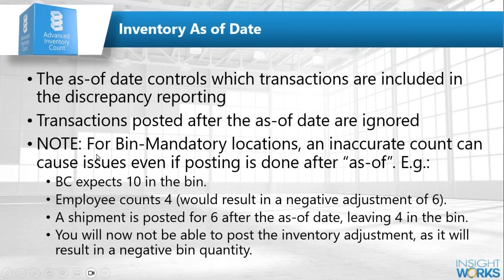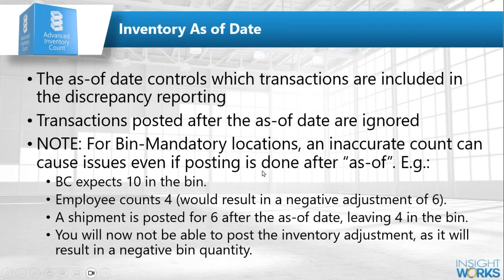Be careful: the as-of date won't save you if you do a bad count. For example, if you have 10 in a bin, count four, and then later sell 10 from that bin, you can no longer do the negative adjustment of minus six because it would result in a negative bin quantity. The system doesn't use a date for bin content — it's either in the bin or it's not. So a bad count can still produce errors on posting if subsequent transactions reduce bin quantities.